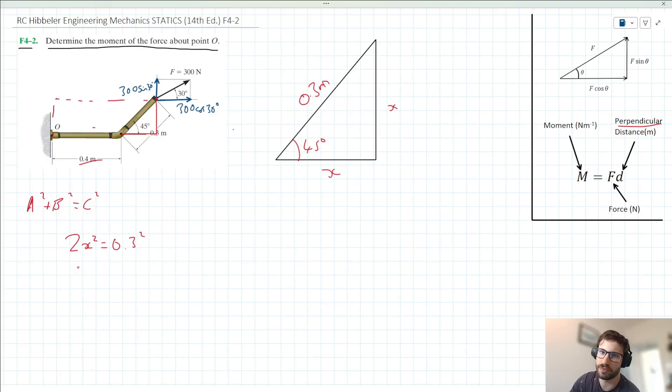Now we can rearrange for x here, so we can divide both sides by two and square root both sides. So we're going to say therefore x is equal to 0.3 squared all over two, square rooted, right? Which when we put in our calculator gives us a value of 0.212 meters.